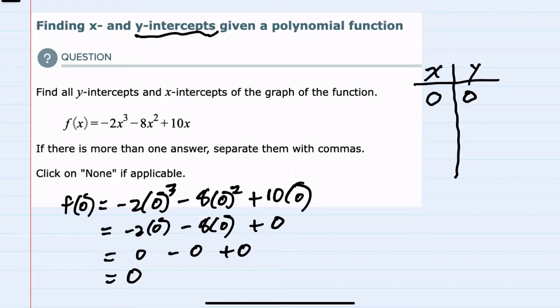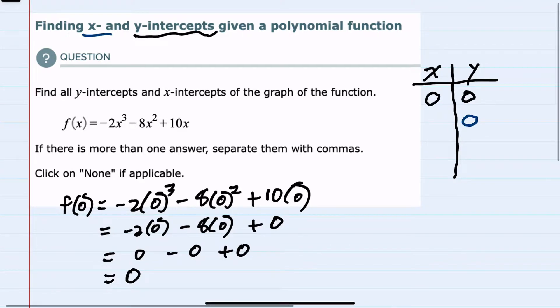And since it's the origin, this is also one of our x-intercepts. As we look for any other x-intercepts we know that for x-intercepts our y value is zero. So here I'm replacing the function f(x) with zero. So I would have zero equals negative 2x³ minus 8x² plus 10x.